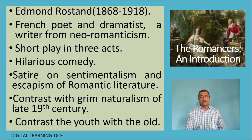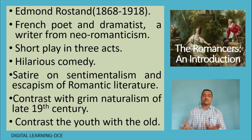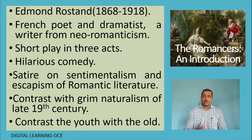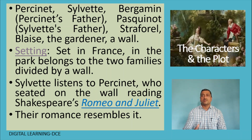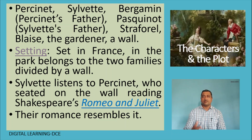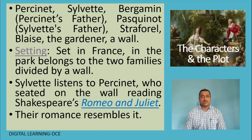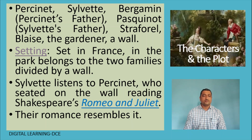We see a contrast between the youth and the old — two characters represent the youth, and two characters represent the old. There are five important characters. Persinet is the central male character, the young man. And we have his lover Silvette, an attractive youth. Their parents: Bergamin is the father of Persinet, and Pasquinat is the father of Silvette.